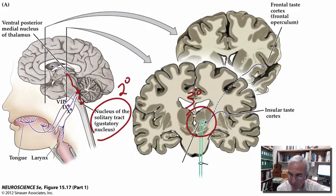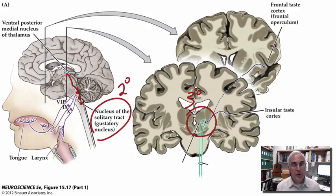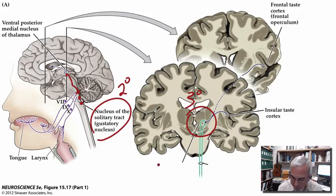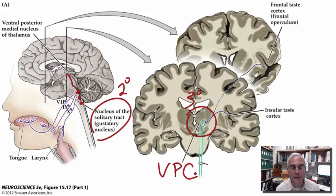The thalamic neurons are the third-order neurons. Our thalamic relay is in the ventral and posterior part of the thalamus, but not the exact same cells we considered when we talked about somatic sensation. For gustation, it's a nearby population of cells in a slightly different part of this broader ventral-posterior thalamic complex.